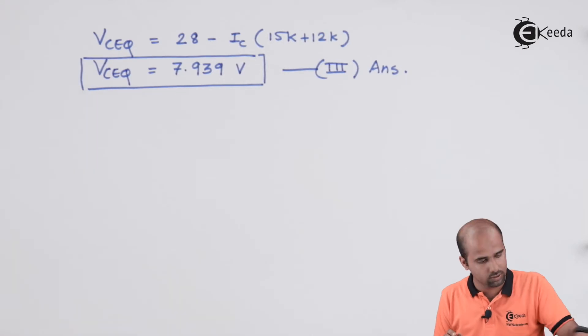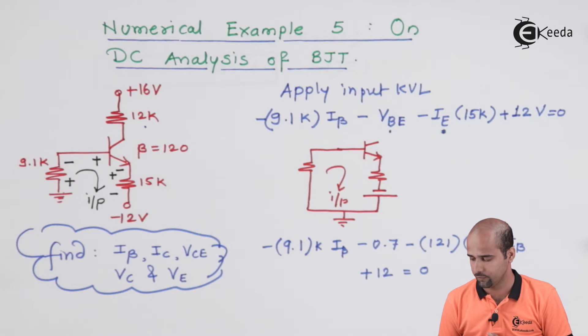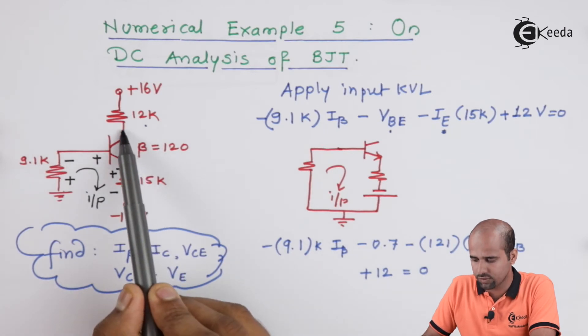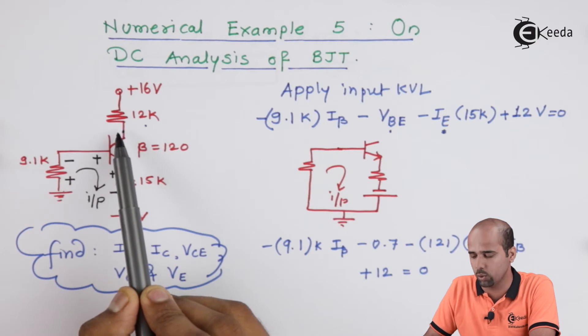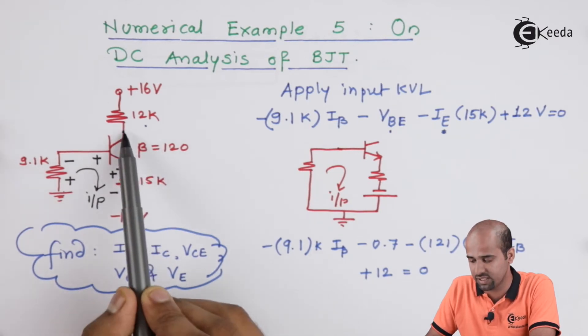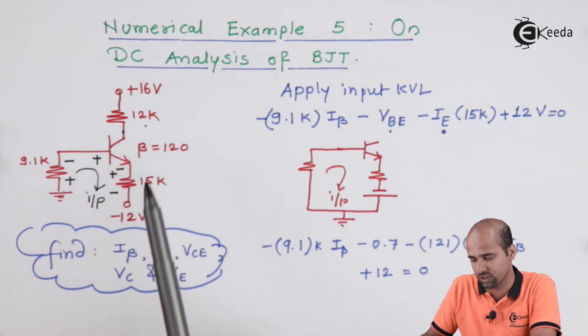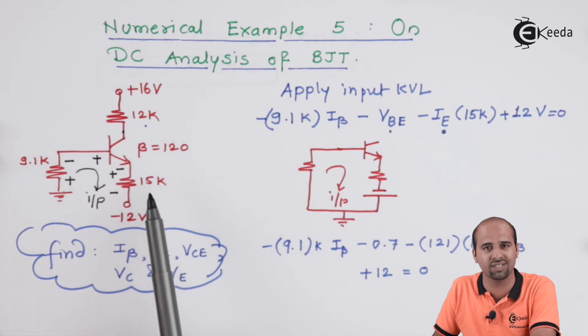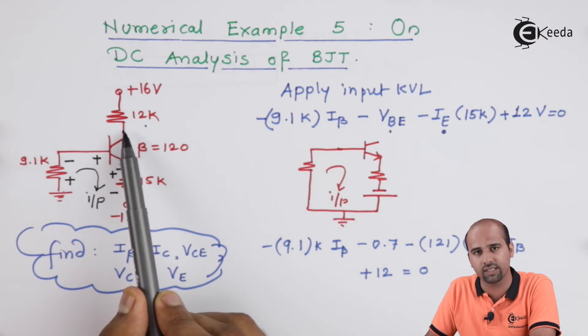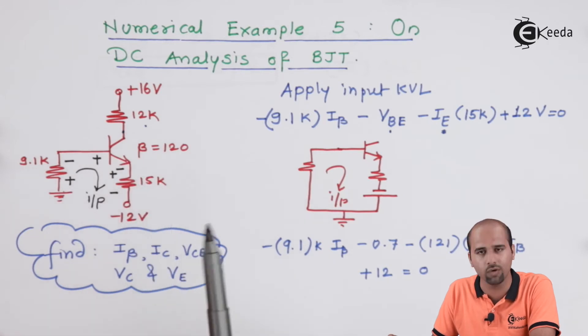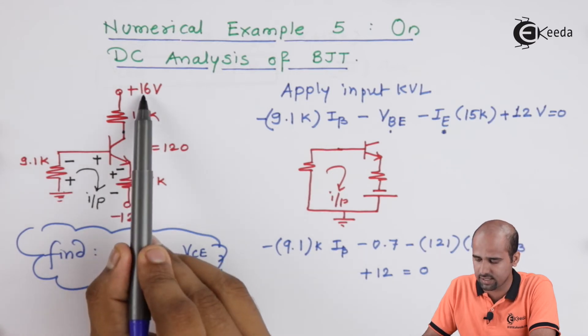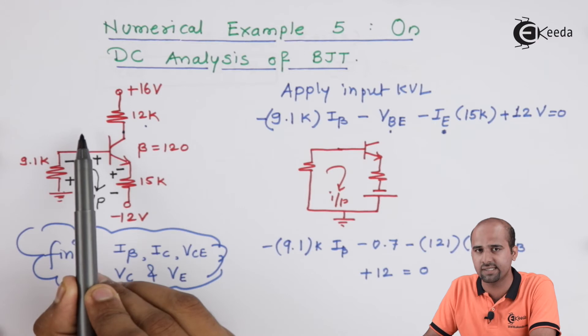Now, here we are expecting VC and VE as well. Once we get the value of VC, we can easily get the value of VE because we know that VCE is nothing but VC minus VE. Either you can find out VC first or VE first, then we can get the another one easily. See this circuit. If we want the value of VC, then we can easily get by applying just KVL over here till the value of VC. Don't think in that way VC is only VCEQ. No. VC is only the collector voltage. VE is emitter voltage and the subtraction of both is nothing but the VCE. So, I want to find out first VC.